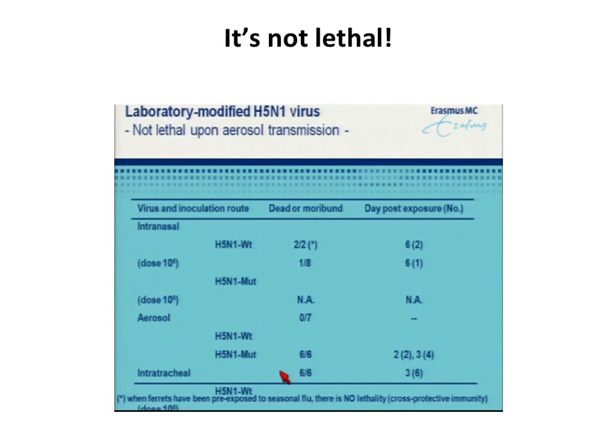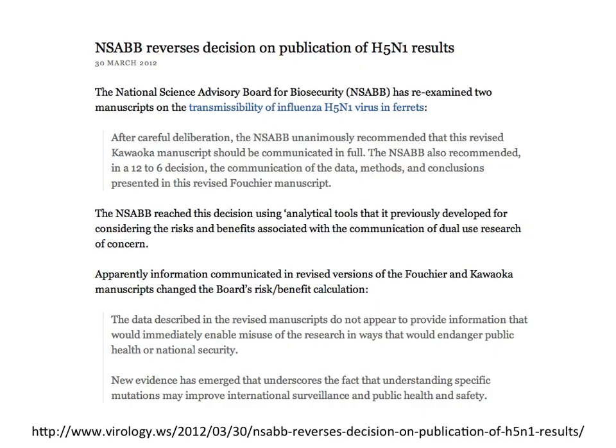Fouchier also showed that if you immunize these ferrets with the 2009 pandemic H1N1 vaccine, they are protected against H5N1 infection — which is really strange because they're totally different hemagglutinins. We don't understand the basis for that.